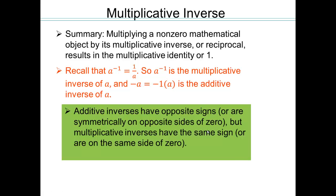That's very, very important. To the power of negative 1 means multiplicative inverse. Multiplying by negative 1 means additive inverse. Additive inverses have opposite signs, like 2 and negative 2 — 2 is to the right of 0 and negative 2 is to the left of 0, symmetrically positioned around 0. However, multiplicative inverses have the same sign; they are on the same side of 0.